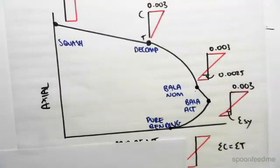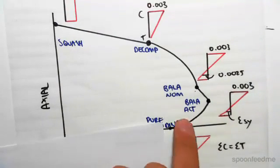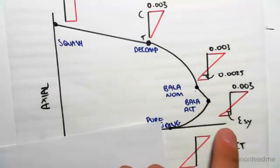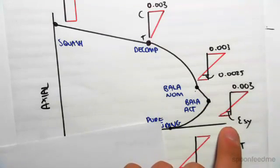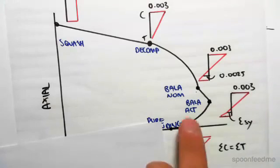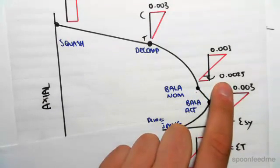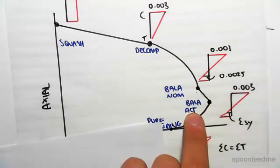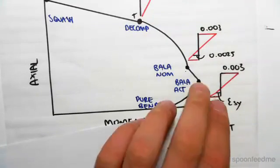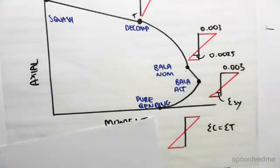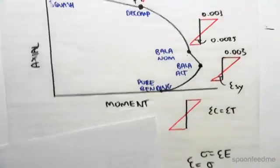Which means that the balanced actual and the balanced nominal is the exact same point when you're dealing with steel which yields at 500 MPa. So, let me repeat that to make it clear. The balanced nominal gives us a strain of 0.0025. So, it tells us the strain in the steel should be 0.0025, whereas the balance actual tells us the strain in the steel is at yield. So, once again, for 500 MPa steel, which is what the code is based on.